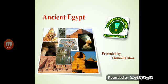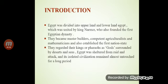Ancient Egypt, presented by Shumayla Khan. Introduction: Egypt was divided into Upper Land and Lower Land Egypt, which was united by King Narmer, who also founded the first Egyptian dynasty. They became master builders, competent architects, good agriculturalists and mathematicians, and also established the first nation state. They regarded their kings or Pharaohs as gods. Surrounded by desert and seas, Egypt was sheltered from trade and attack, and its isolated civilization remained almost untouched for a long period.